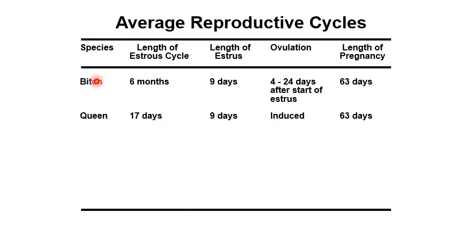For the female dog (bitch), they have a unique estrous cycle because it is longer — about 6 months. The length of estrus is 9 days, and ovulation will occur 4 to 24 days after the start of estrus. The estrous cycle in the dog will vary; some have 1 and some have 2 estrous cycles per year, but they are classified as monoestrous animals.